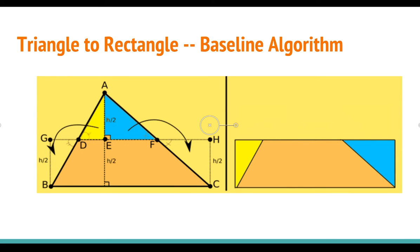So first, let's consider triangle to a rectangle. We call this our baseline algorithm. This is actually very simple. Given the triangle ABC, we simply take the midpoints of AB and AC and let's call them D and F, and make a line out of DF.